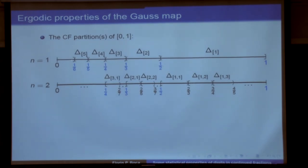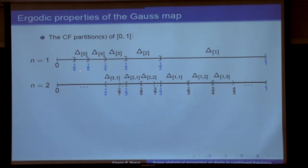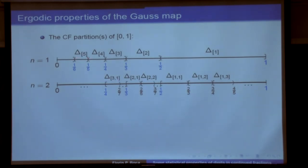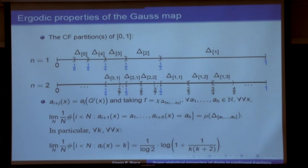Here is how the continued fraction partition of (0,1) looks. For n=1, we get intervals of the form (1/(a+1), 1/a). For n=2, we get something like n-squared intervals. Inside each of those intervals, we get a countable family of subintervals. The only thing that changes is that the orientation reverses — intervals in the partition are left-open at one level and right-open at the next. For irrational numbers, this doesn't matter.